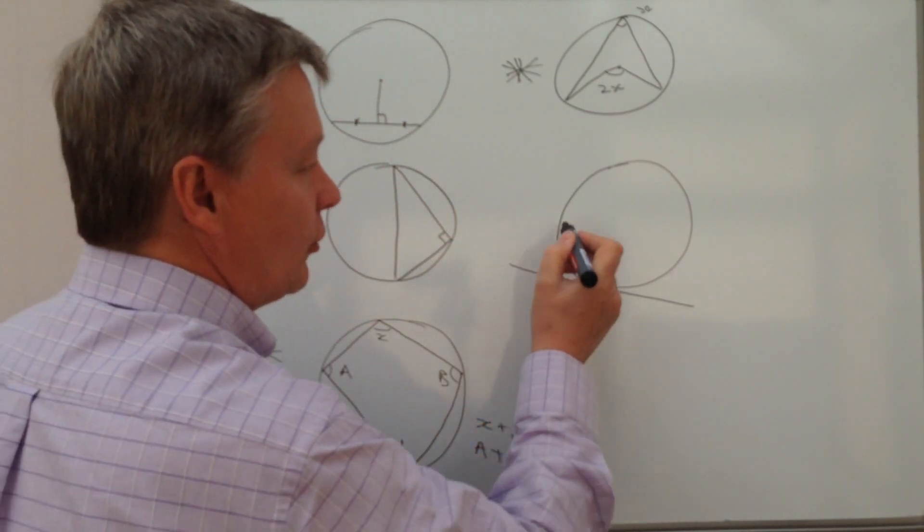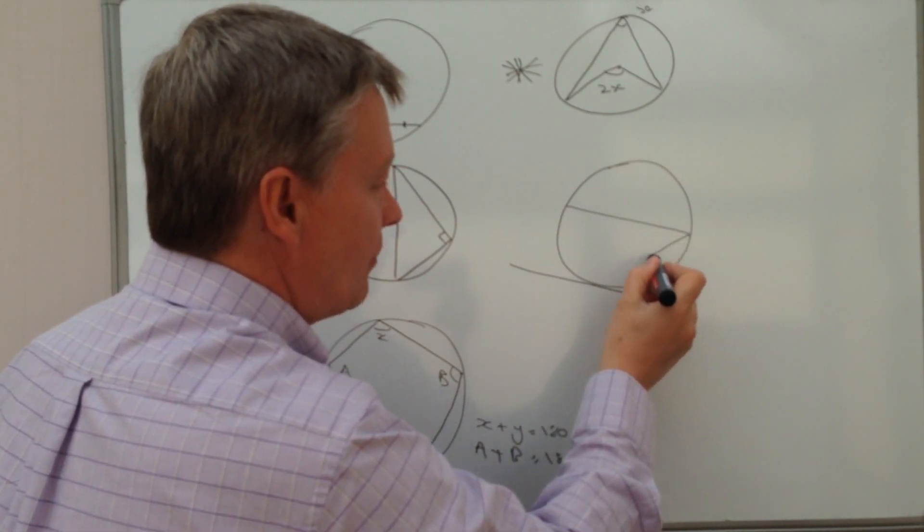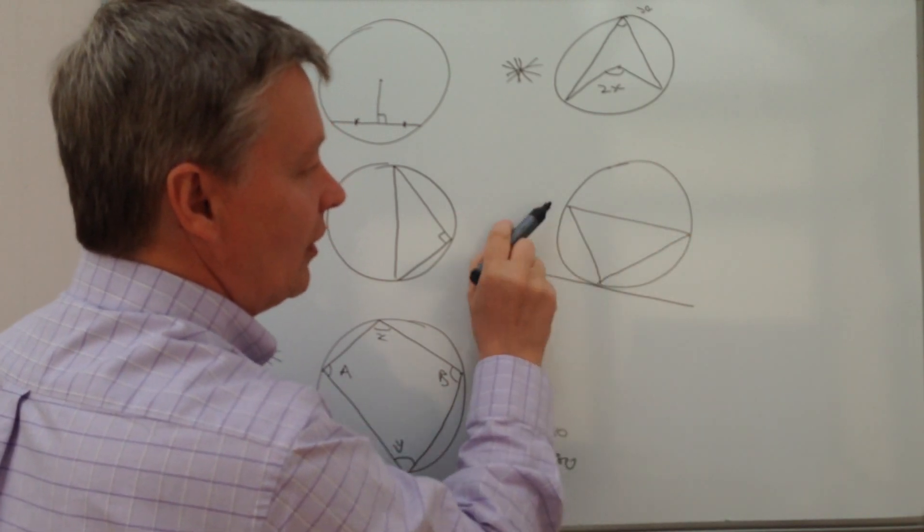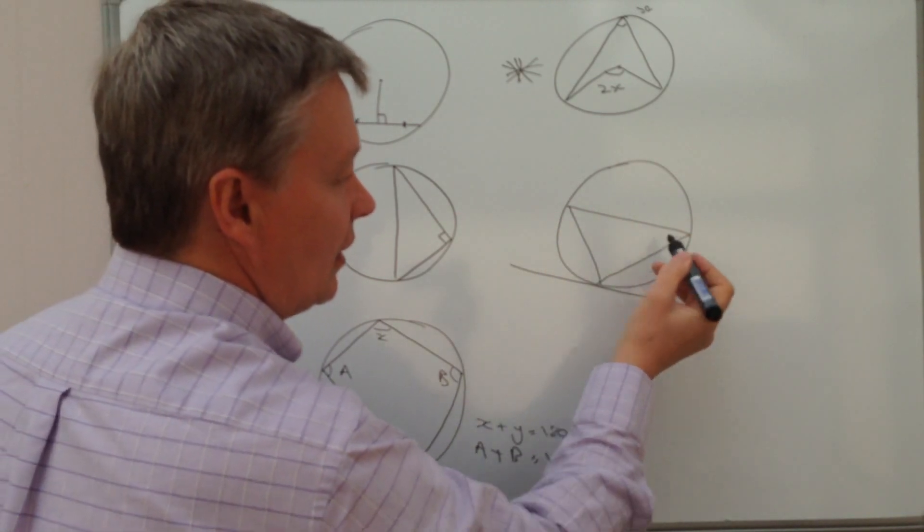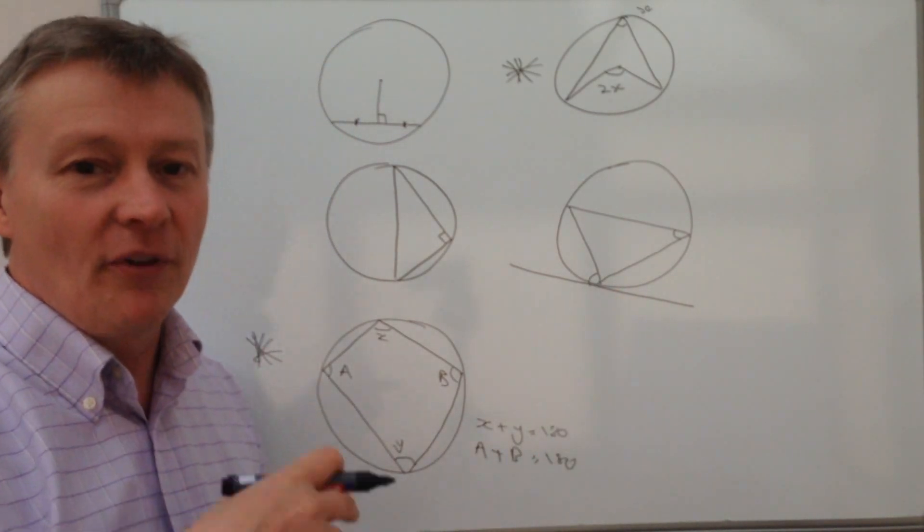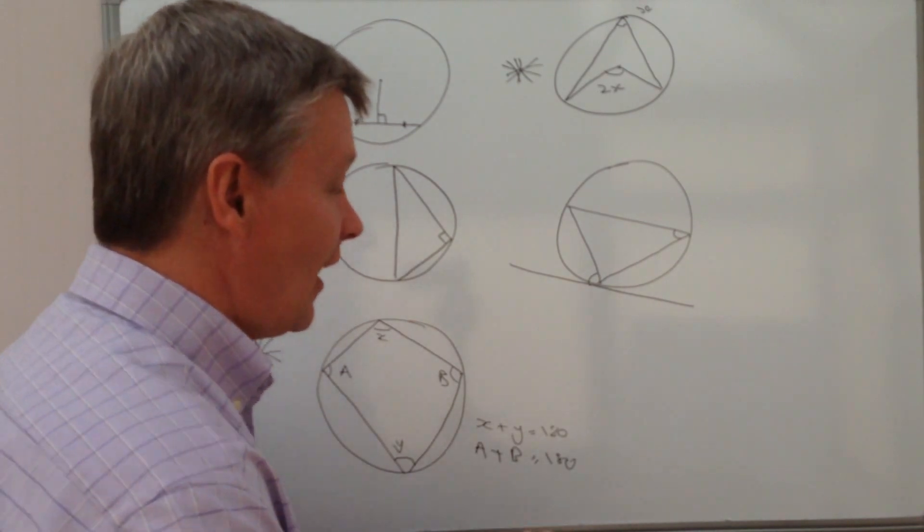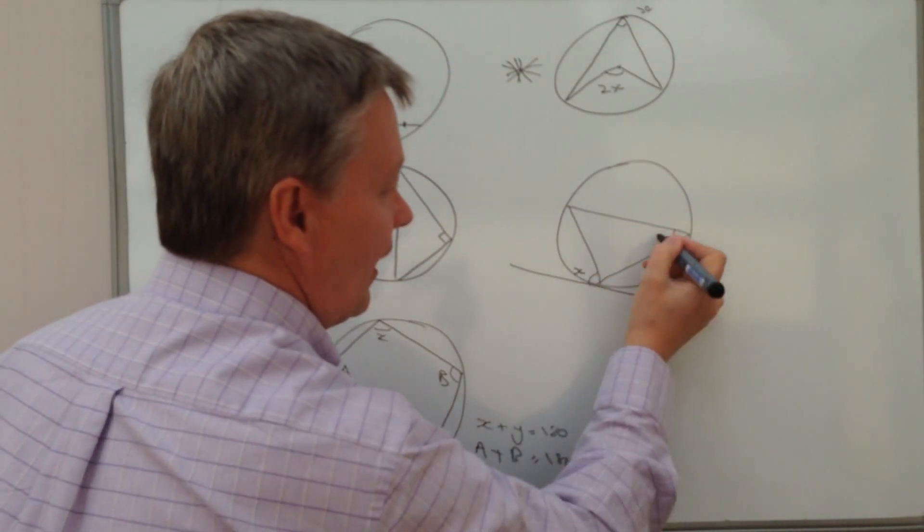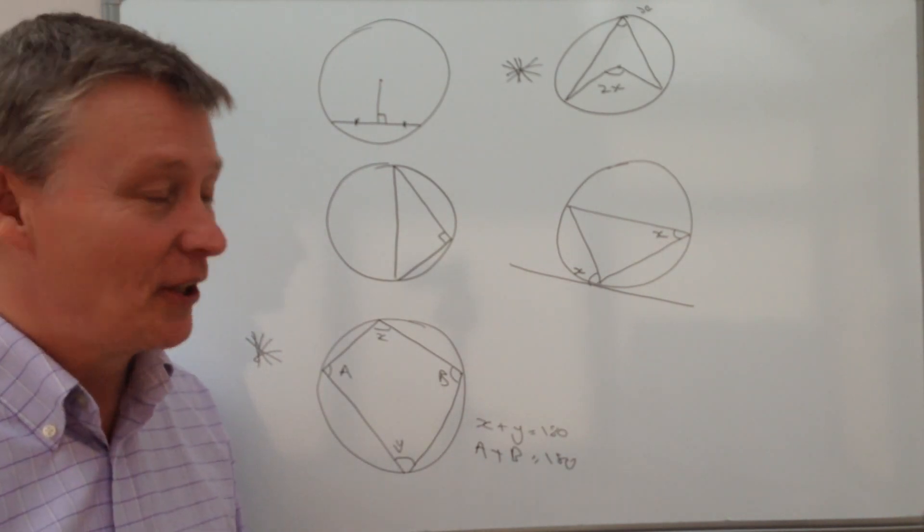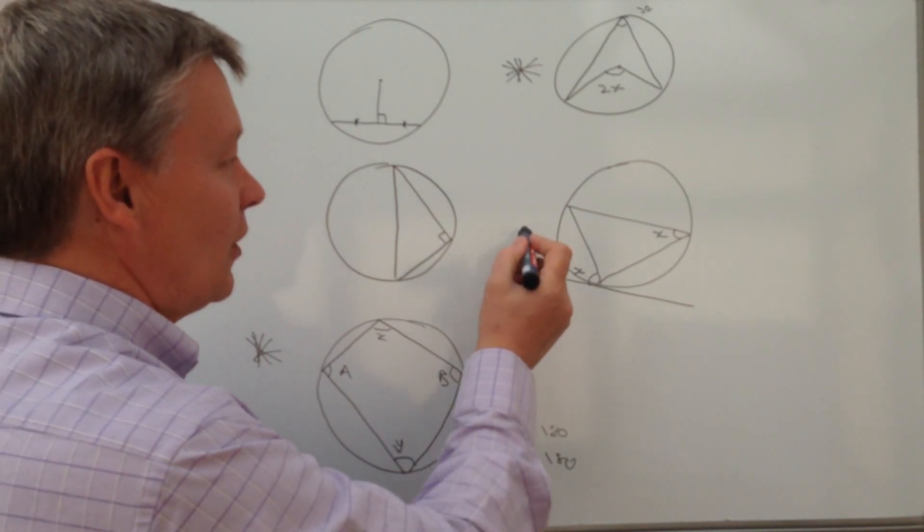But basically, if you've got a tangent, and you create from that tangent a shape like this, this is a chord along here. Then this angle and this angle, although I've not drawn it particularly well, but this angle and this angle are the same. So actually, X here and X here is exactly the same. I'm really sorry, it's not a particularly good drawing.